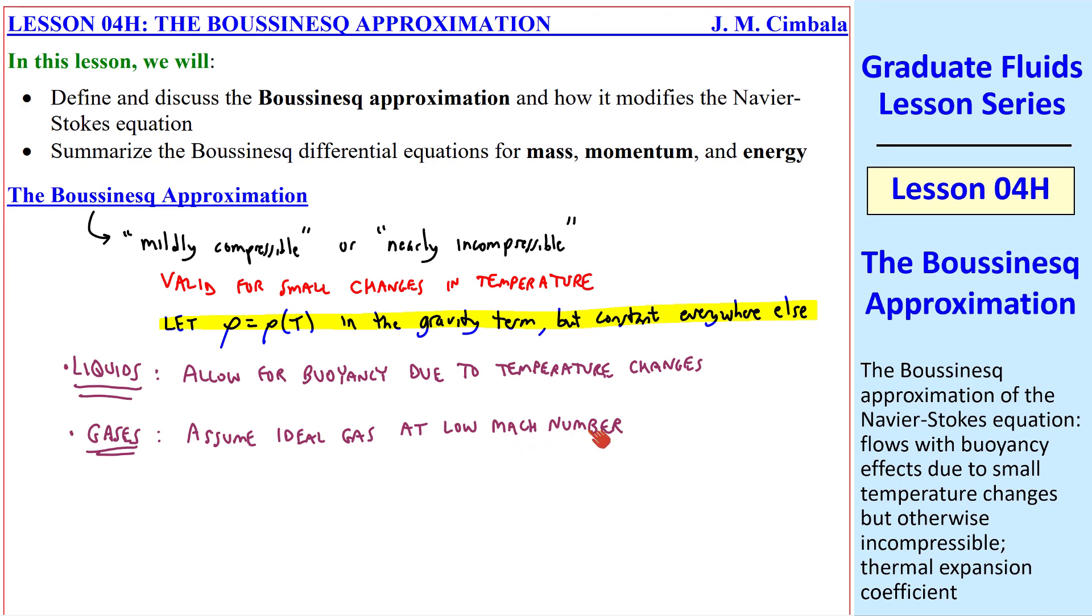But at low Mach number, density changes are very small. In both of these cases, we'll assume that density is constant everywhere but in the gravity term, where it's a function of temperature. So for gases, we'll also allow for buoyancy due to temperature changes.